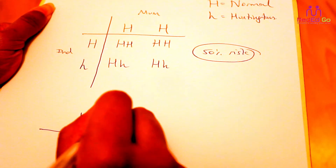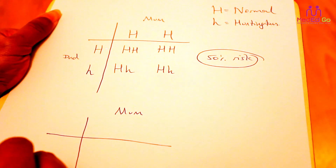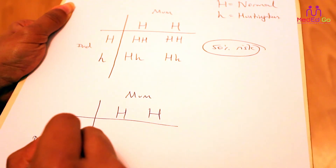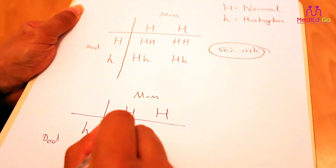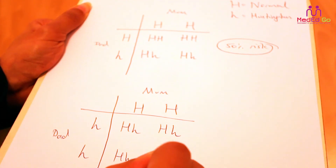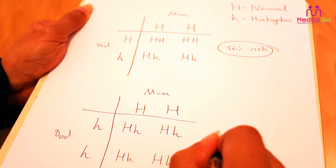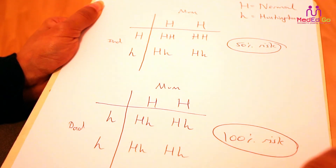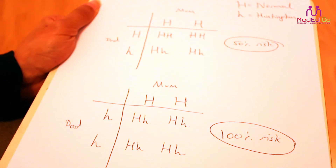The second scenario is that your dad could in fact have two Huntington's disease genes. If we look at that — mum again has two normal genes, and dad has two Huntington's disease genes — when we put it together, one from mum and one from dad, all four outcomes result in having the Huntington's disease gene, meaning everybody in that case would have a chance of having Huntington's disease.